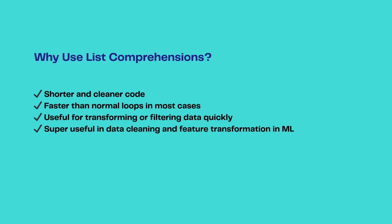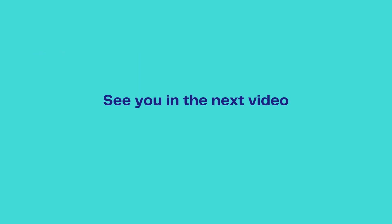So why use list comprehension? First, it is shorter and makes your code cleaner. It is faster than normal loops in most cases, and it is useful for transforming or filtering data very quickly. List comprehension replaces loops in a single line and can include conditions, functions, nested loops, and if-else conditions. It increases processing speed and is super useful in data cleaning and feature transformation when working with machine learning. I hope the concept of list comprehension is now clear — add a comment if you have any questions. See you in the next video!